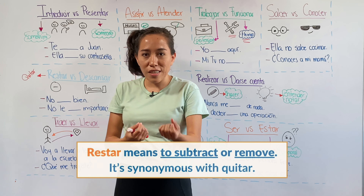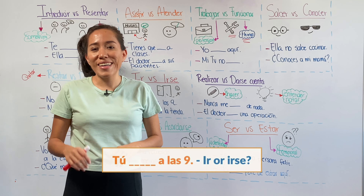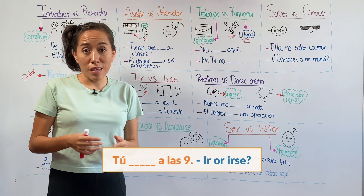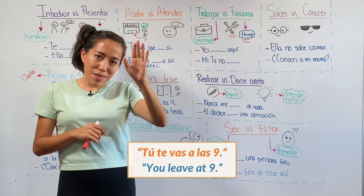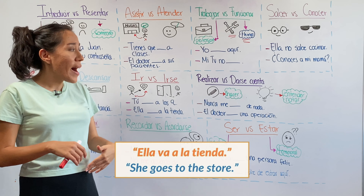Ir versus irse. In Spanish, ir is the verb we use to say go — to say that a person is going from point A to point B, as in voy a la tienda, I go to the store. Irse, on the other hand, is used to emphasize that a person is leaving a place — for instance, es tardísimo, me voy a la escuela, it's late, I'm leaving to school. Help me with these examples: tú blank a las nueve — irse: tú te vas a las nueve. Ella blank a la tienda, from point A to point B: ella va a la tienda.